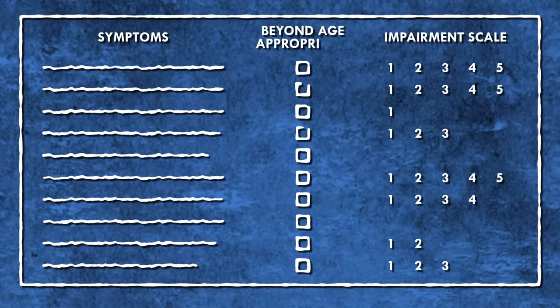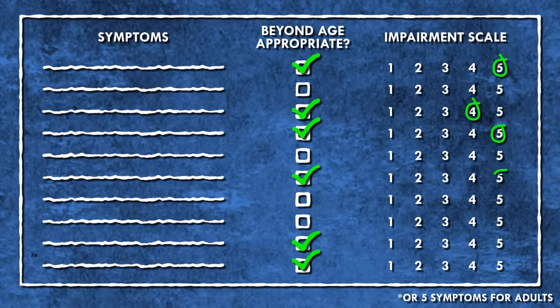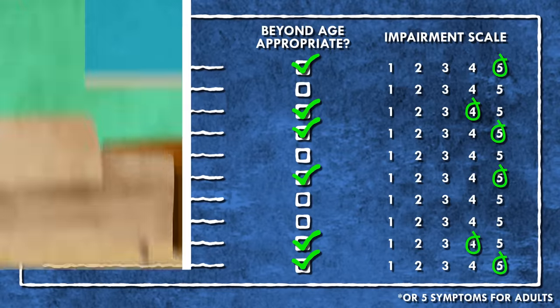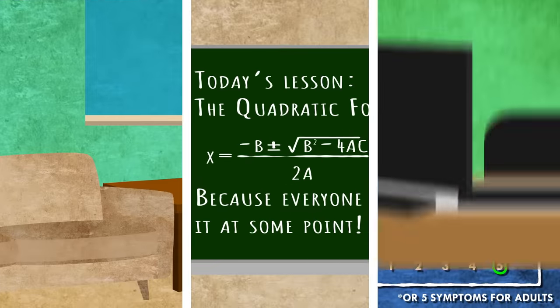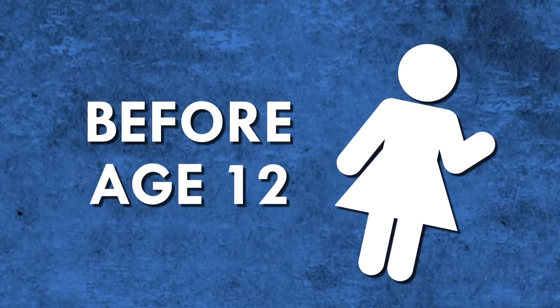While everyone does these things sometimes, not everyone has ADHD. An ADHD diagnosis requires at least six symptoms that are beyond what is age-appropriate, that significantly impair multiple aspects of one's life, such as home, school, and work, that have persisted for at least six months, been present since before the age of 12, and can't be better explained by a different condition.